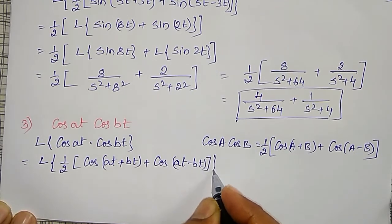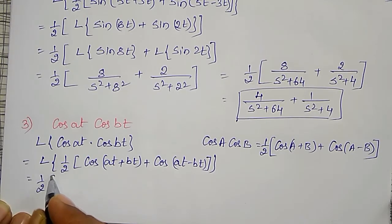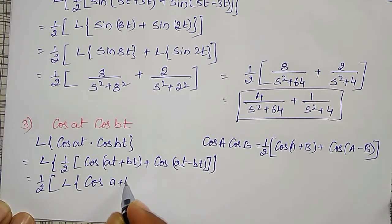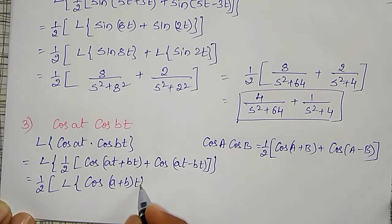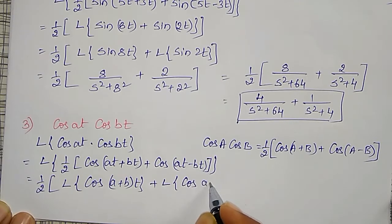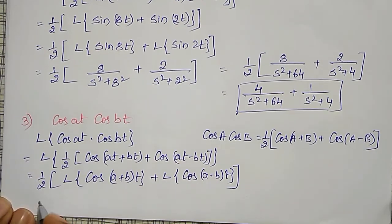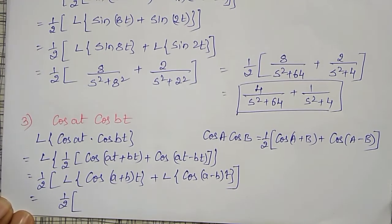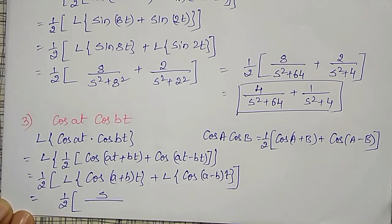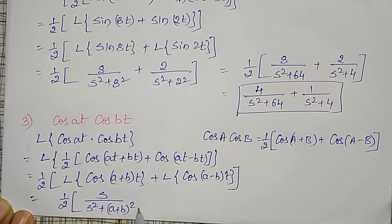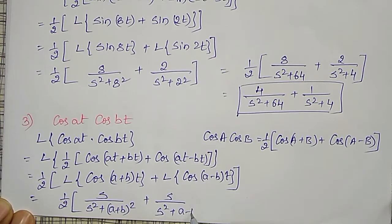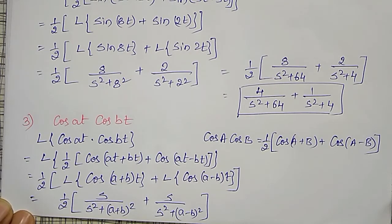By the linear property, this separates into 1/2 times [Laplace transform of cos((a+b)t) plus Laplace transform of cos((a-b)t)]. Applying the formula for cos(at) — which gives s divided by (s squared plus a squared) — we get 1/2 times [s divided by (s squared plus (a+b) squared) plus s divided by (s squared plus (a-b) squared)]. You can factor out s and simplify further or keep this form.